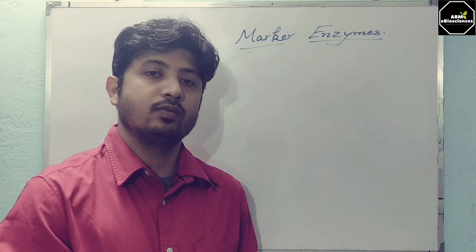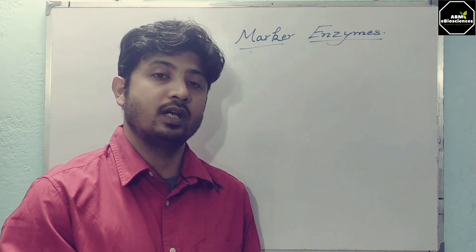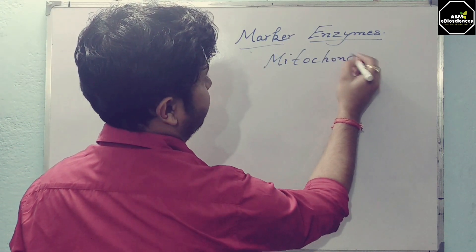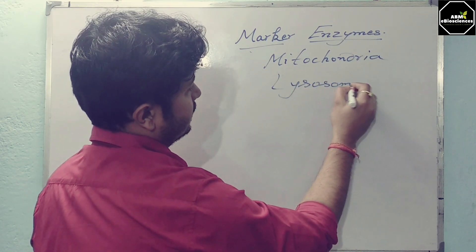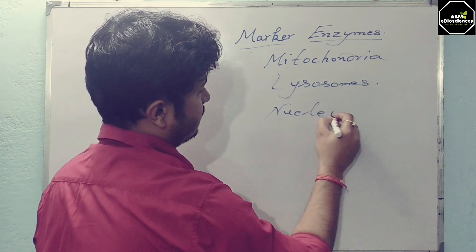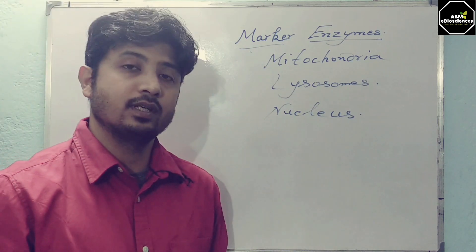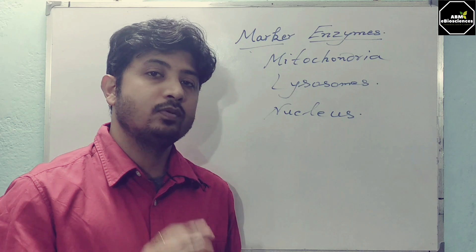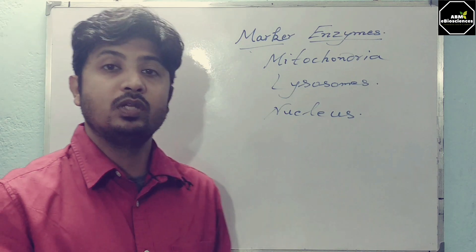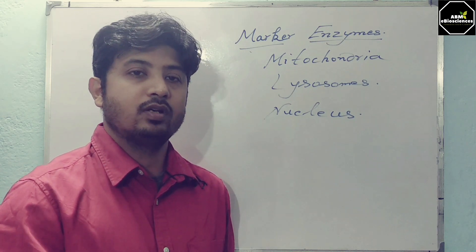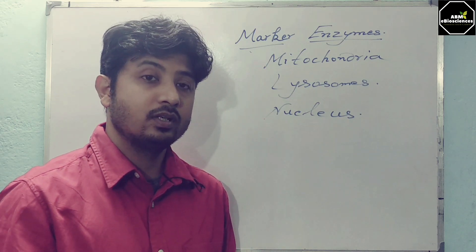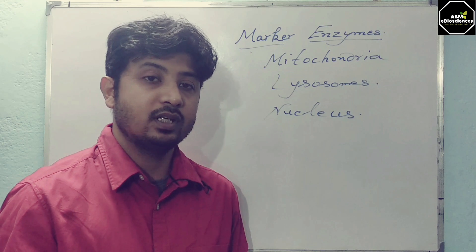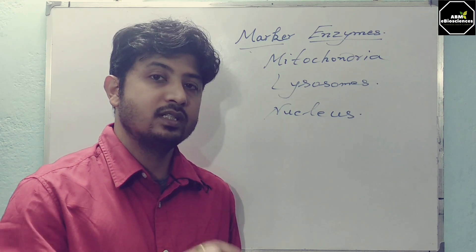These marker enzymes are very useful in isolating or recognizing a particular cell component when doing specific work. For example, subcomponents like mitochondria, lysosomes, and the nucleus are all subcomponents of a cell. If you are working with mitochondria and want to isolate only mitochondria, you must do so without any contamination from other organelles. That's when having a specific marker becomes essential — similarly to how in recombinant DNA technology, a selectable marker gene confirms gene insertion and expression.